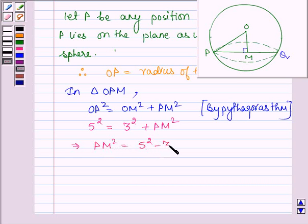This further implies that PM squared equals 5 squared minus 3 squared, which implies that PM equals square root of 25 minus 9, which equals square root of 16, which is further equal to 4.